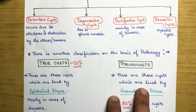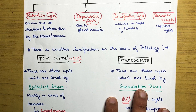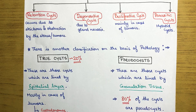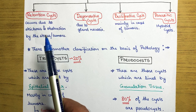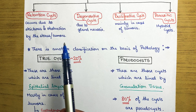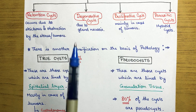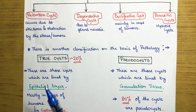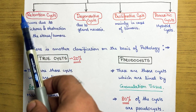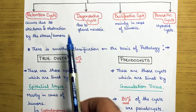The first type of acquired pancreatic cyst is retention cysts. These occur due to stricture or obstruction by stones or tumors. Whenever a stone or tumor blocks the pancreatic duct, it leads to fluid formation and little sacs form in the pancreas — those are retention cysts.